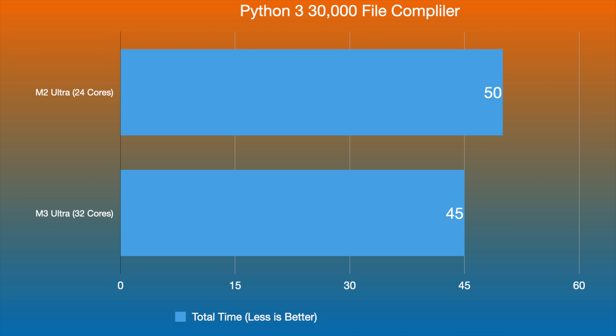The same test was done with Python 3 — a 30,000-file test. The M2 Ultra with 24 cores completed it in 50 seconds compared to 45 seconds for the M3 Ultra — just a five-second difference, which isn't much at all. The M3 Ultra did win, but I was hoping to see something like 30 seconds versus 50 seconds, and that was sadly not the case.